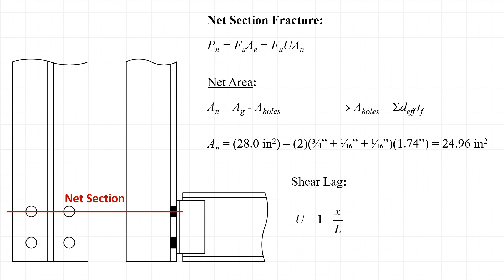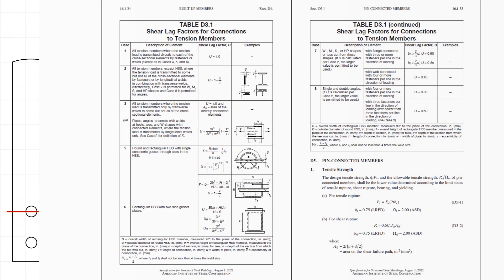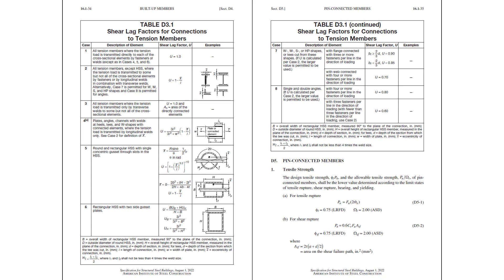When we consider shear lag, we're going to use case two out of table D3.1, where u is equal to 1 minus x̄ over L. And looking at table D3.1, we can see that case two would be an applicable case for this situation where we have a T section with one of the two elements connected and the other element not connected. In this case, the flange element of the T section is directly connected to the adjacent member, but the web element of the T section is not directly connected.